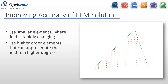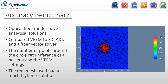The first thing I did with the finite element mode solver was compare it to an optical fiber mode solution. These modes are useful benchmarks because they have analytical solutions. We have a fiber vector solver in our software, so I compared it to that, the finite difference solver, and ADI. The vector finite element solver is a lot more accurate, largely because you can set the number of points around the circle and get a very accurate approximation of the circular geometry, whereas the FD and ADI rectangular grids lead to that staircase effect.